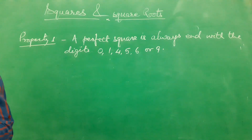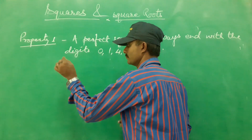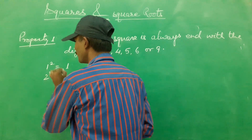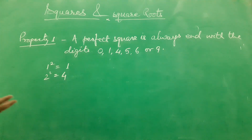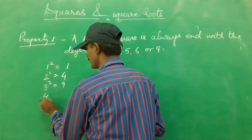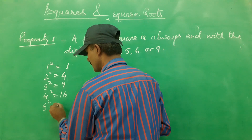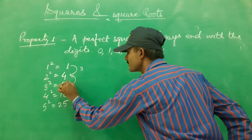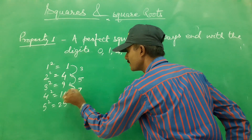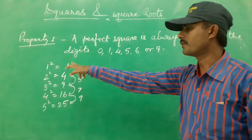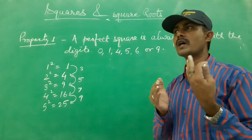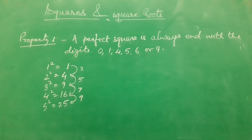Now if you write the squares in a different manner you will get another property, and then we will look at that. Let's look here: 1 squared is 1, 2 squared is 4, 3 squared is 9, 4 squared is 16, 5 squared is 25. Now just look at the difference. From 1 squared to 2 squared the difference is 3. Next difference is 5. Next difference is 7. Next difference is 9. It means the square of a number is the sum of odd numbers starting from 1.